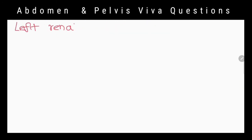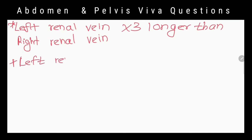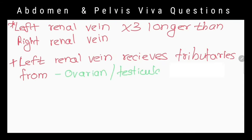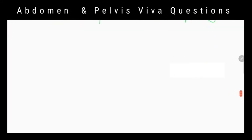What about the renal veins — are they similar on both sides? No. The left renal vein is three times longer than the right renal vein. It also receives tributaries from the left ovary or testes, left suprarenal gland, and the left portion of the diaphragm.